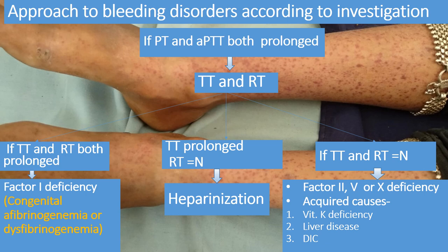When both PT and APTT are prolonged, differentiate between inherited and acquired disorders. Acquired causes include vitamin K deficiency, which is very common, liver disease, and DIC. If vitamin K deficiency is suspected, a vitamin K trial should be done. If liver disease is suspected, LFTs should be checked. If DIC is suspected, fibrinogen, D-dimer, and FDP tests should be performed to rule out DIC.